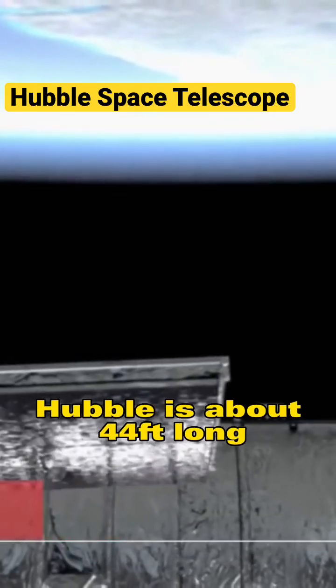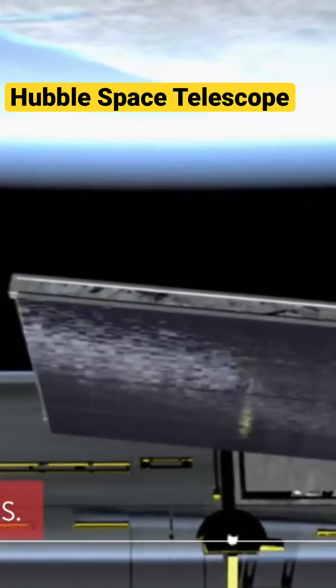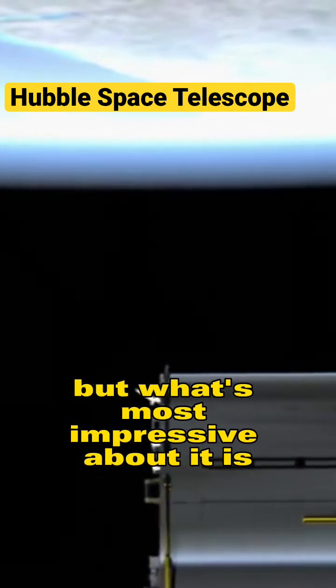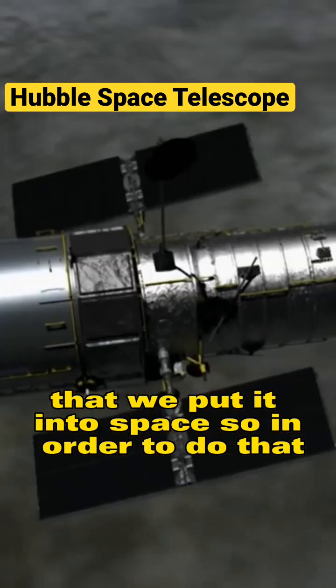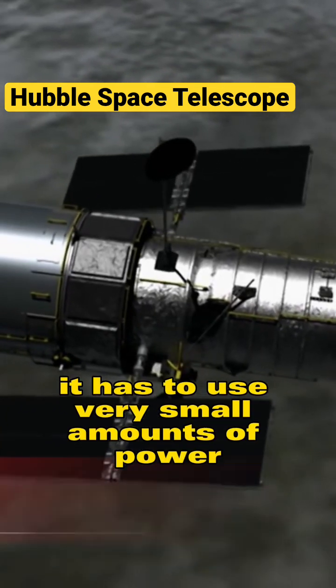Hubble is about 44 feet long and weighs more than 25,000 pounds. But what's most impressive about it is that we put it into space. So in order to do that, it has to use very small amounts of power.